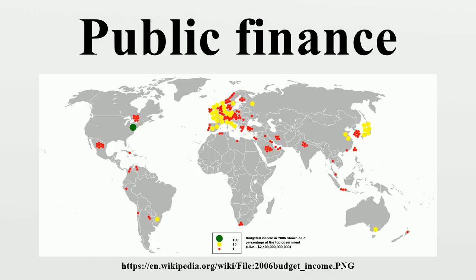Public finance is the study of the role of the government in the economy. It is the branch of economics which assesses the government revenue and government expenditure of the public authorities and the adjustment of one or the other to achieve desirable effects and avoid undesirable ones. The purview of public finance is considered to be threefold: governmental effects on efficient allocation of resources, distribution of income, and macroeconomic stabilization.